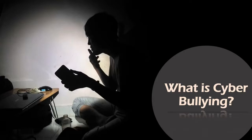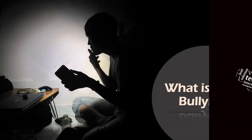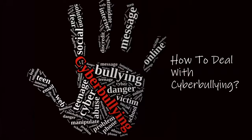Some cyber bullying crosses the line into unlawful or criminal behavior. To deal with cyber bullying: do not accept friend requests from unknown people on social media. Remember, what you post online stays there. Do not share personal information like date of birth, address, and phone numbers online. Use privacy settings to control who can access your posts. Do not install unwanted software or apps from unknown sources. Be careful revealing personal details in common online spaces. Block and report using the site's reporting function if someone makes you uncomfortable.